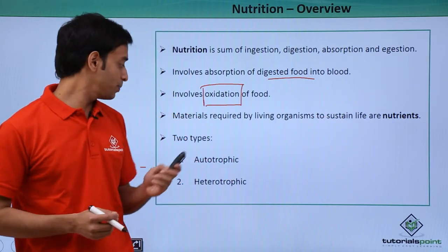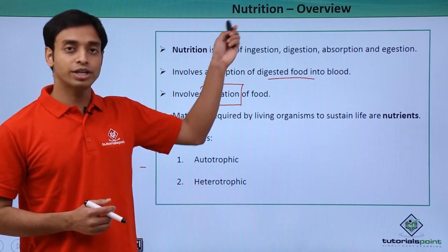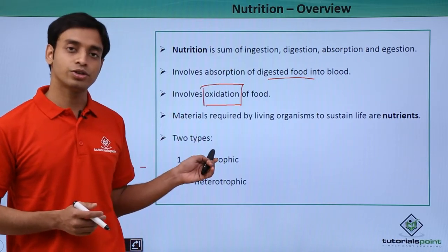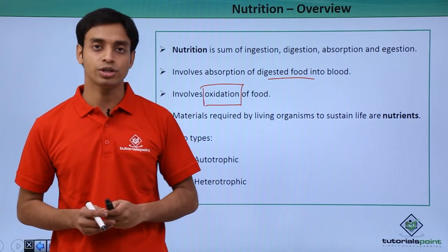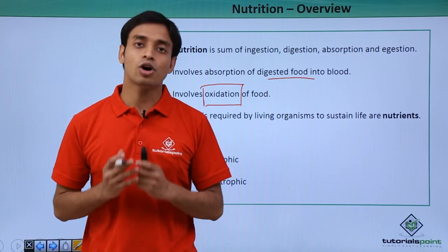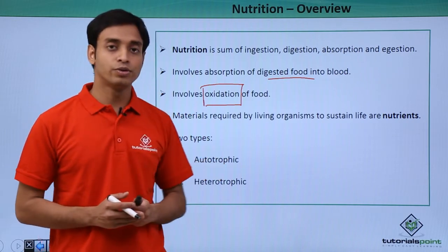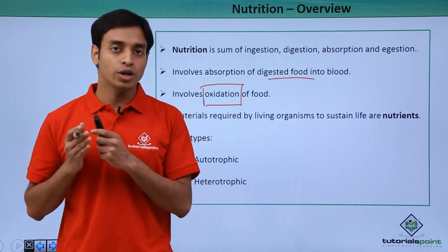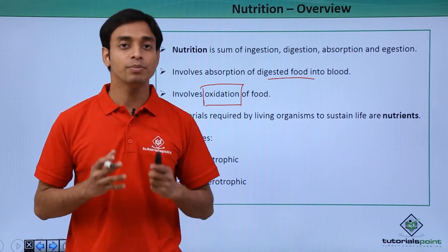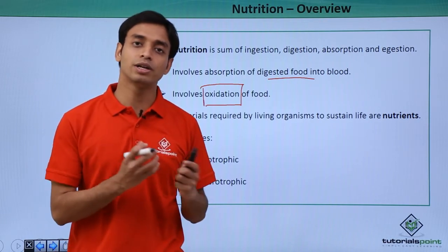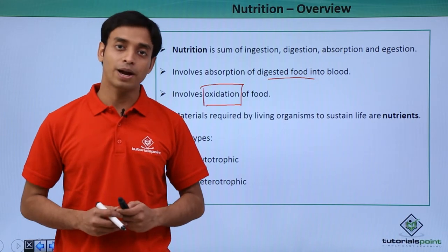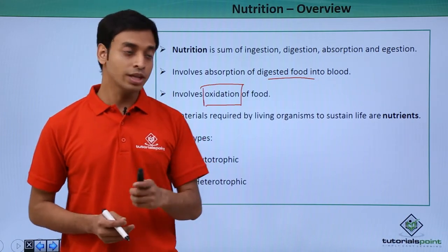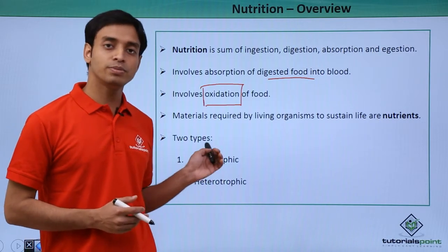The process of nutrition can be of two major types: autotrophic mode of nutrition and heterotrophic mode of nutrition. Autotrophic mode of nutrition means the organisms which are autotrophs can prepare their own food from simpler raw materials. For example, plants prepare their own food through the process of photosynthesis.